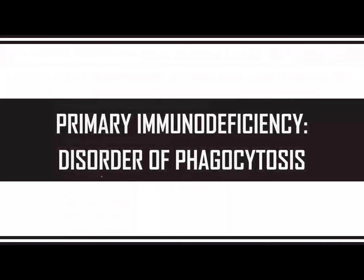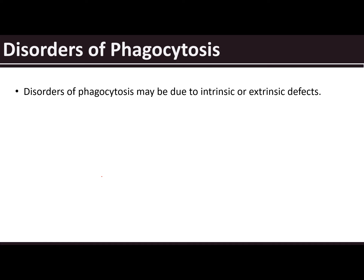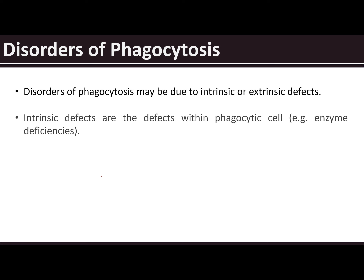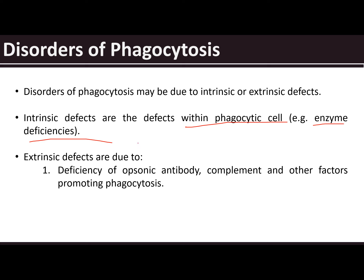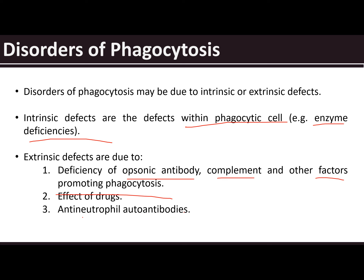Now let's go to the disorders of phagocytosis. These can involve intrinsic or extrinsic defects. Intrinsic defects are found within the phagocytic cell and are usually enzyme deficiencies. Extrinsic defects are due to deficiency of opsonic antibody, complement, and other factors promoting phagocytosis, including effects of drugs and antineutrophil autoantibodies.